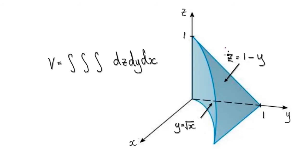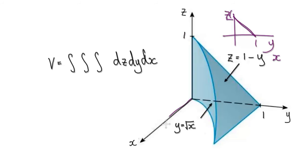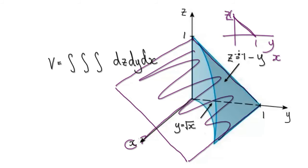Looking at this equation, you've got a plane here. Picture the z-axis and the y-axis — intercept of 1, a gradient of negative 1. So it's a straight line here. The absence of an x would mean that you're going to get a trace along the x-axis. Looking at this line, drag it parallel to the x-axis, and you're going to get a slanted plane given by this equation.